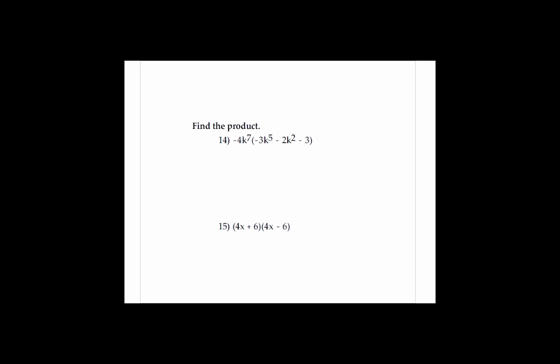Next one, we're going to find the product, so we just have to distribute. Tell me, what do you get when you distribute −4k^7 times −3k^5? That will be your first term.